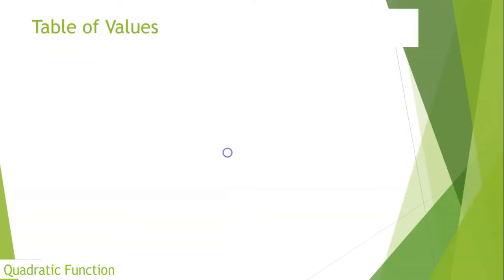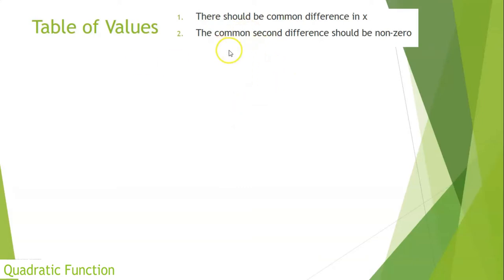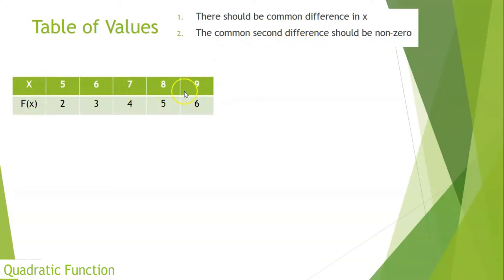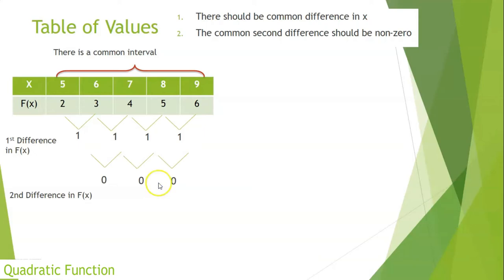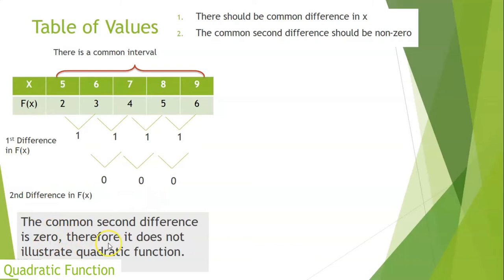What if the given are ordered pairs? How are you going to identify whether they are defining a quadratic function or not? There are two bases. Number one, there should be a common difference in x. And number two, the common second difference should be non-zero. For example, these are the x values — 5, 6, 7, 8, 9 — there is a common interval. The first difference in f(x) is: 3 minus 2 is 1, 4 minus 3 is 1. Getting the second difference, that would be 0. Therefore, it does not illustrate a quadratic function.